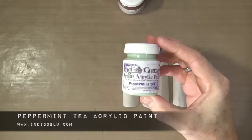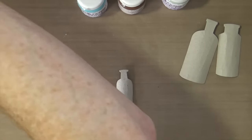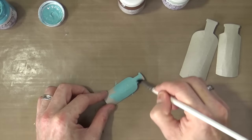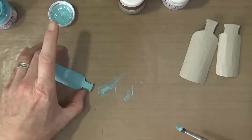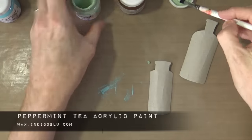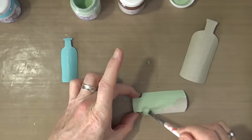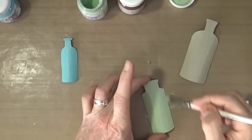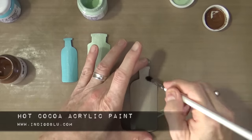I'm using the hot cocoa acrylic paint, the peppermint tea acrylic paint, and also the townhouse teal acrylic paint. Don't worry if you didn't catch those names first off, because I will list them again each time I use them. To start off, on the smaller bottle I'm going to be using the townhouse teal, and on the next size bottle I'm using the peppermint tea acrylic paint.